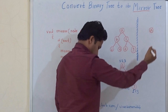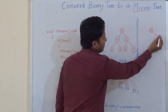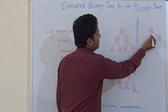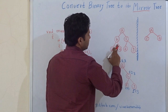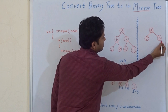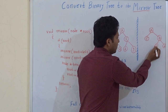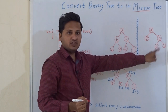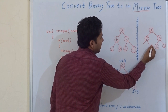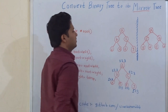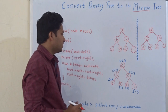So if this is the node, then the left child B will become its right child, and the right child C will become its left child. Now, the left child of B is D, so D will become its right child and E will be the left child. For C, F will become the right child and G will become the left child. This is how a tree is converted into its mirror image. Let's see the code for that.